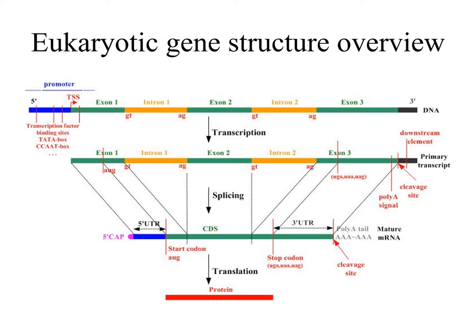Here's a generic picture of a eukaryotic gene with its important parts noted. The promoter is in blue and it's 5-prime to the location where transcription actually starts. The promoter guides transcription but is not itself transcribed. We then produce the primary transcript, which needs to be modified in multiple ways before it can go to the cytosol for translation.